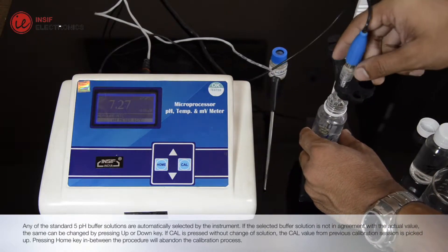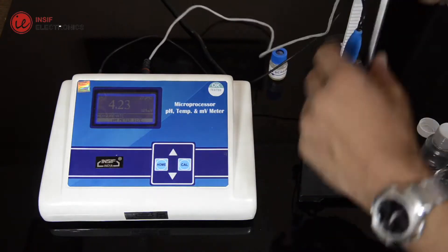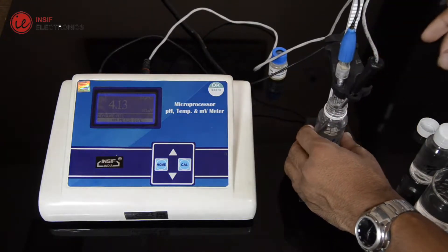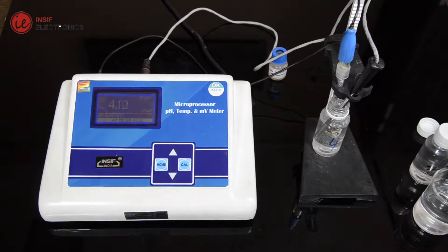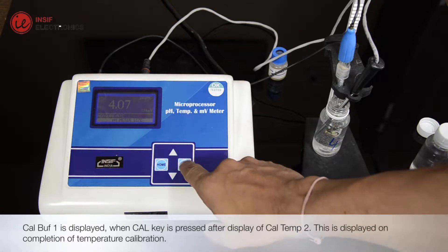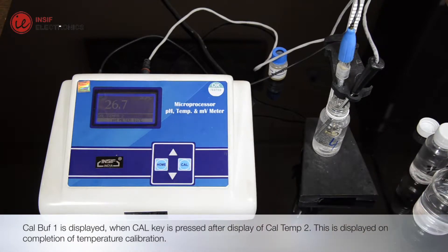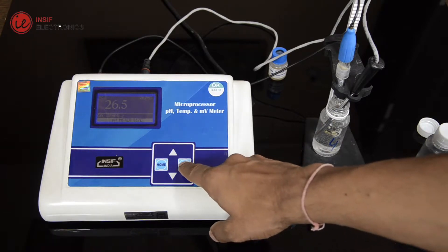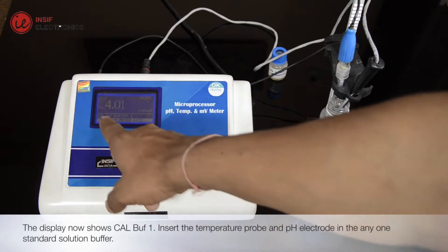Pressing home key in between the procedure will abandon the calibration process. CalBuff1 is displayed when Cal key is pressed after display of CalTemp2. This is displayed on completion of temperature calibration. The display now shows CalBuff1.